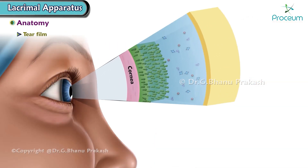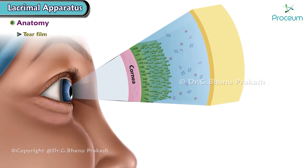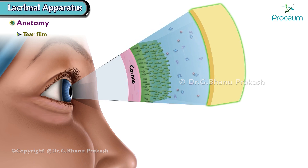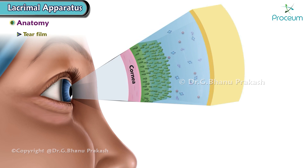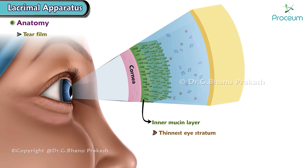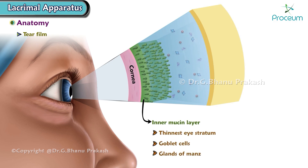Tear film of the eye is made up of three layers. 1. Inner mucin layer — it is the thinnest stratum of the tear film. Goblet cells and glands of Manz are present in this layer.